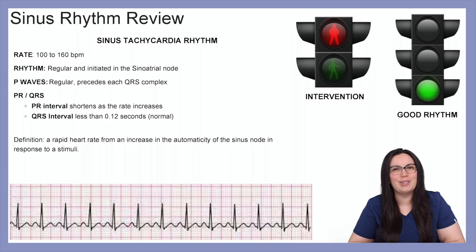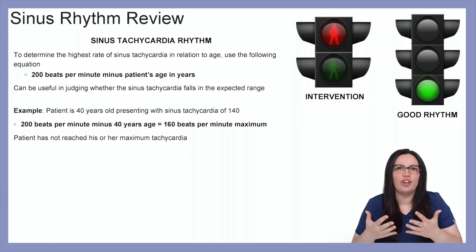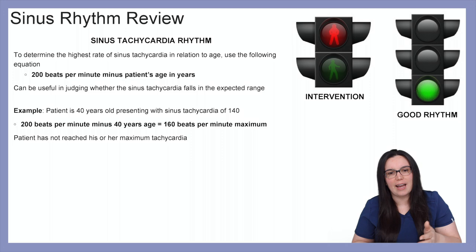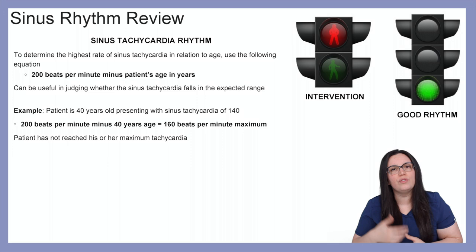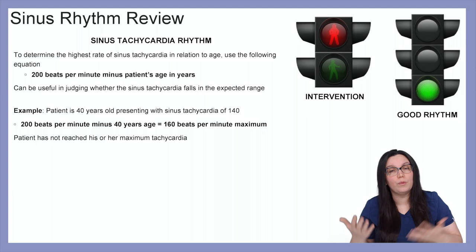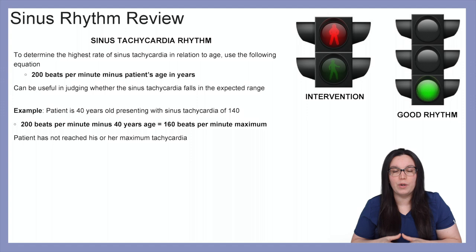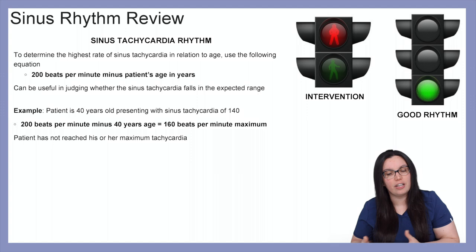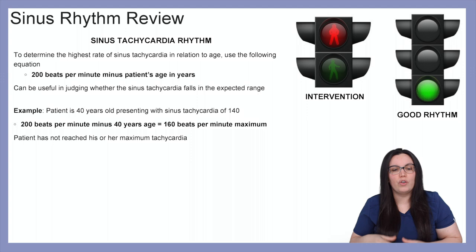One thing we need to look at is whether we can determine if this is a true sinus tachycardia for our patient. To determine that, we take the highest rate of sinus tachycardia in relationship to age using the equation: 200 beats per minute minus the patient's age in years. This can be useful in judging whether the sinus tachycardia falls within the expected range. For example, if we have a patient who is 40 years old presenting with a sinus tachycardia of 140, we take 200 minus 40, which equals 160 beats per minute maximum. So our patient has not yet reached his or her maximum tachycardia but still falls in that sinus tachycardia range.